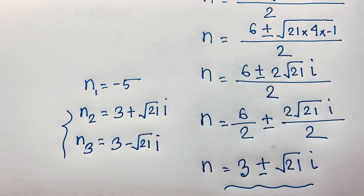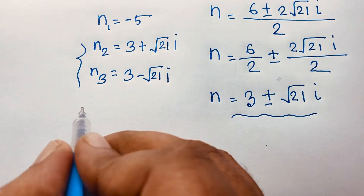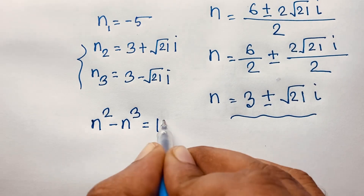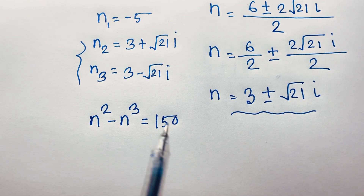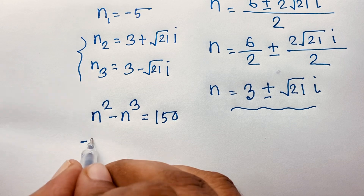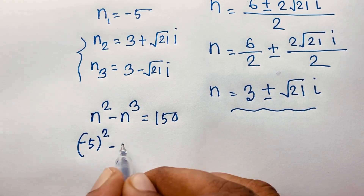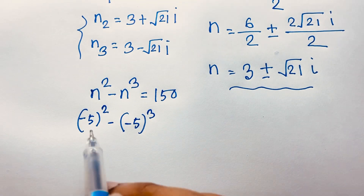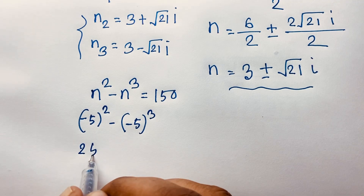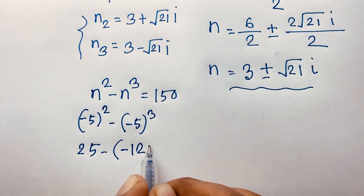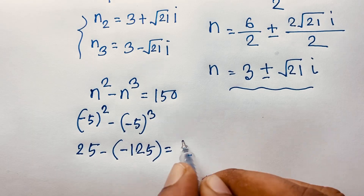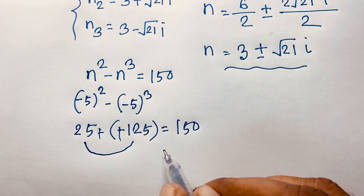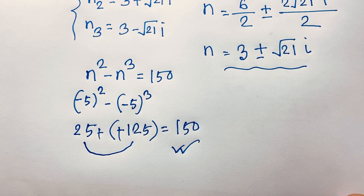Let's check our real solution. The original question is n squared minus n to the power 3 equals 150. Substituting n equals negative 5: negative 5 whole squared minus negative 5 to the power 3. Since the power is even, negative 5 squared is positive 25, minus negative 125, which gives us minus minus, so 25 plus 125 equals 150. Left hand side equals right hand side — verified!